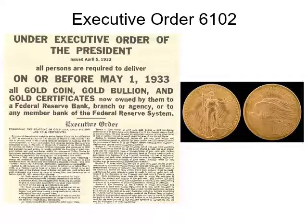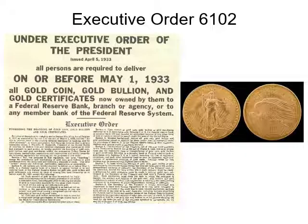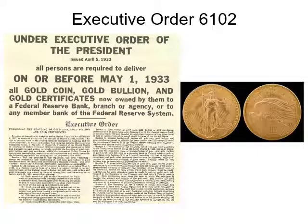Executive Order 6102 required all persons to deliver on or before May 1, 1933 all but a small amount of gold coin, gold bullion, and gold certificates owned by them to the Federal Reserve in exchange for $20.67 per ounce.